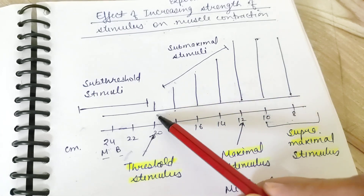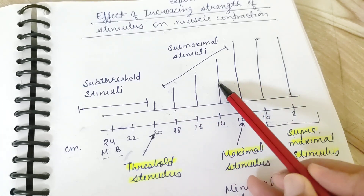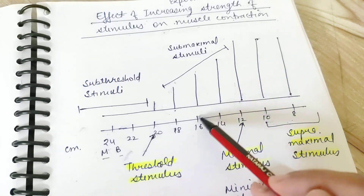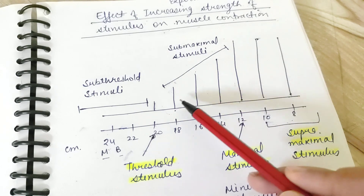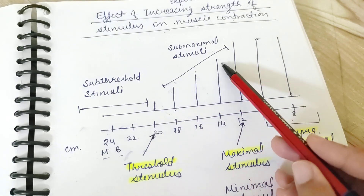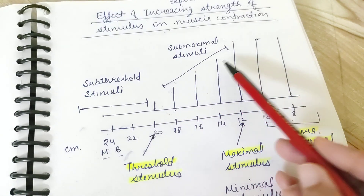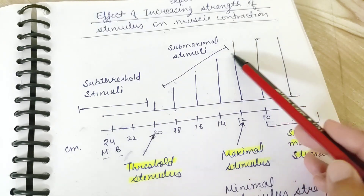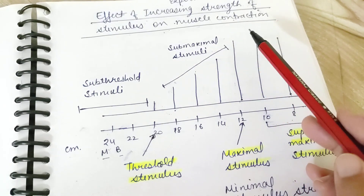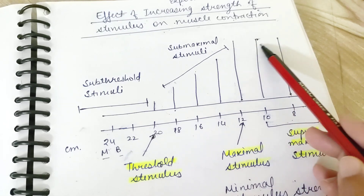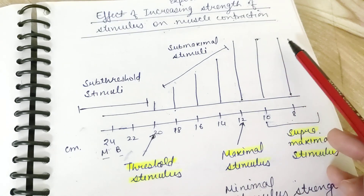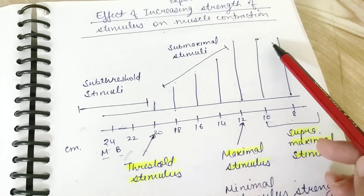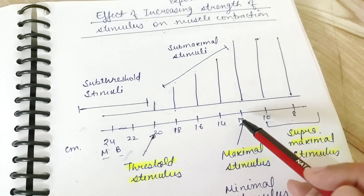That means some nerve fibers are stimulated and action potentials are generated in those, leading to contraction of those muscle fibers. This increase in nerve fiber stimulation is called recruitment of motor units. With increasing stimulus, an increasing number of motor units are recruited. At maximal stimulus, all the motor units present in the nerve are already recruited — that's why further increasing the strength causes no further change in response.